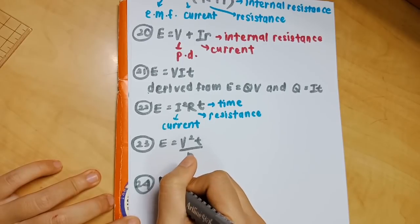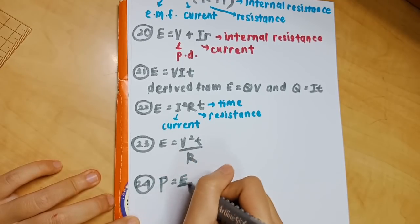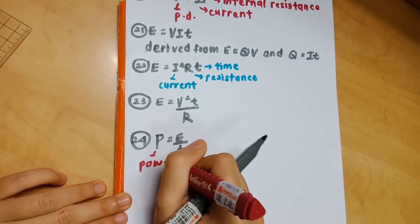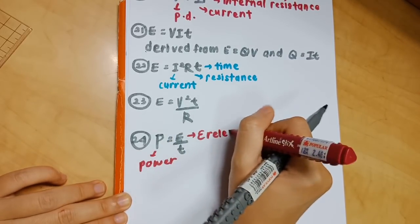Number 23: E equals V squared T over R. Number 24: P equals E over T. P refers to power, E is energy released, and T is time.